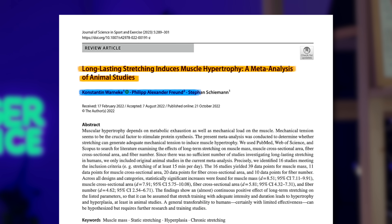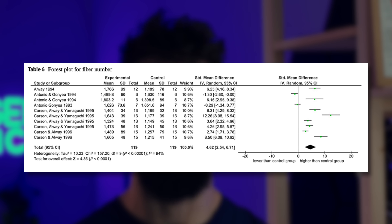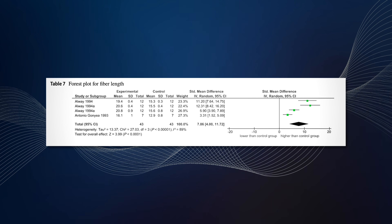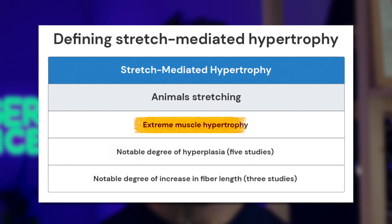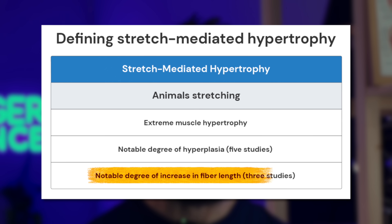Let's review how muscle growth occurred within the Warnicke meta-analysis. Across five studies, a substantial degree of hyperplasia — addition of new muscle fibers — was noted, though the evidence in humans is much less clear. Additionally, looking at increases in fiber length or longitudinal hypertrophy, across three studies very substantial hypertrophy was seen. All these effect sizes were far outside the realm of what we typically observe in humans. To summarize, stretch-mediated hypertrophy as first conceptualized in animals is characterized by three things: an insane amount of muscle growth, an increase in the number of muscle fibers — hyperplasia — and an increase in fiber length or longitudinal hypertrophy. All of these changes are quite dramatic in the animal data.